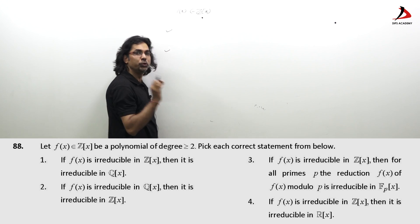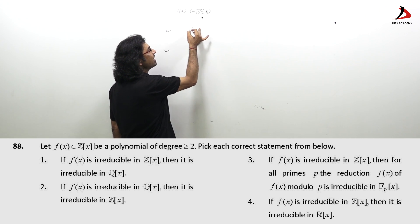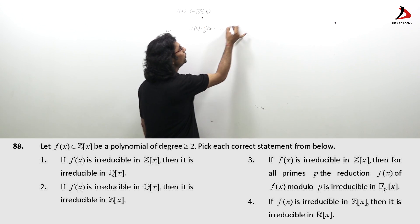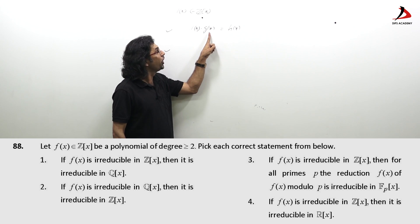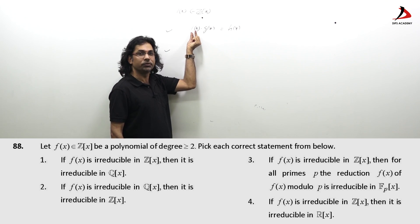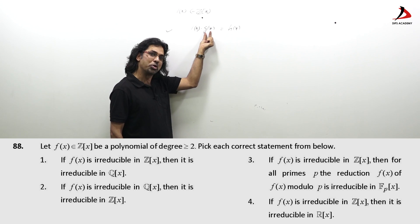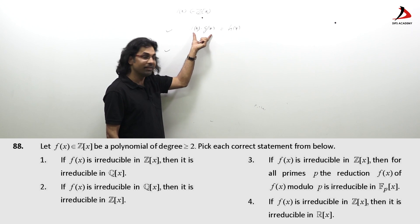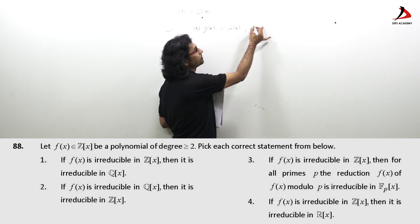Now, my claims are based over two basic results, one Gauss lemma, which says f(x) into g(x) equal to h(x). If f and g are primitives, that means the GCD of coefficients of f is 1 and that of g is also 1, that is called primitive polynomial. If f and g are primitive, then their product is primitive in Z[x].